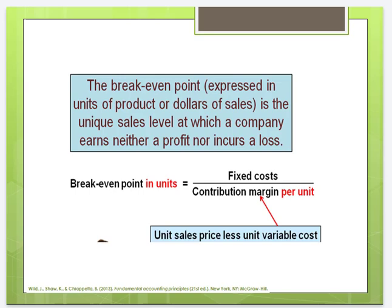The only way that our net income is going to be exactly equal to zero is when our sales are exactly equal to our cost. So at that point, we break even, meaning that we do not earn a profit, but we also do not incur a loss. Net income is zero.